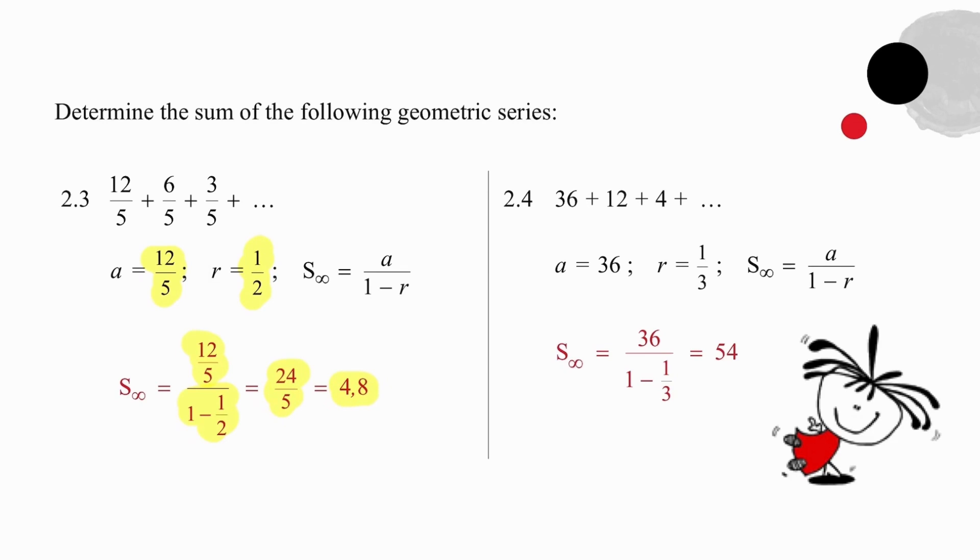And then finally, in 2.4, we have the first term of 36, a ratio of a third. We substitute both a and r and we end up with the result of 54. So a basic question on sum to infinity is very, very easy to do.